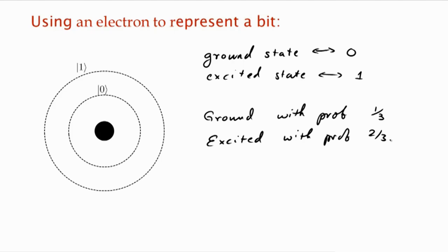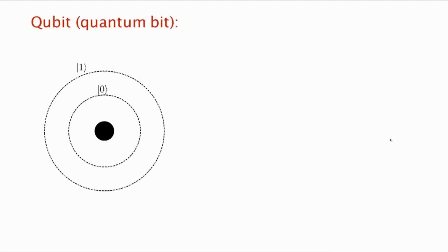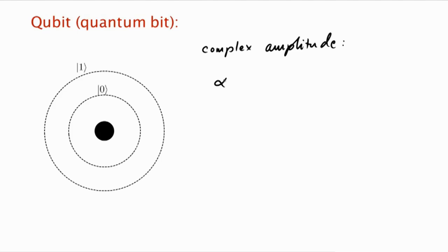But in fact, quantum mechanics tells us that something else happens. What happens is that the electron ends up not making up its mind whether it's in the ground or excited state, but it ends up in a superposition of ground and excited state, where it has some complex amplitude, say alpha, of being in the ground state and some complex amplitude, beta, of being in the excited state.